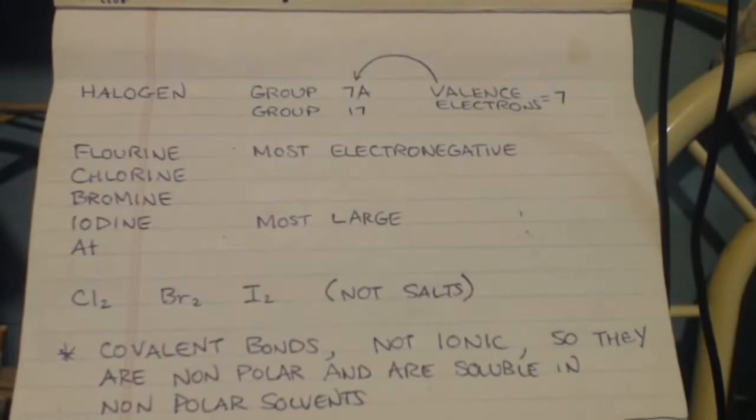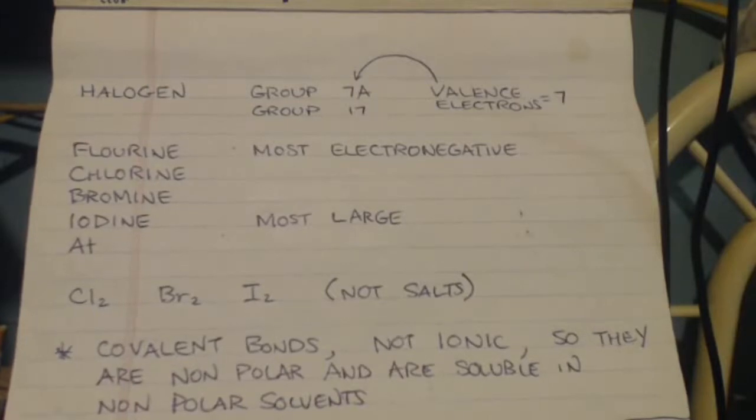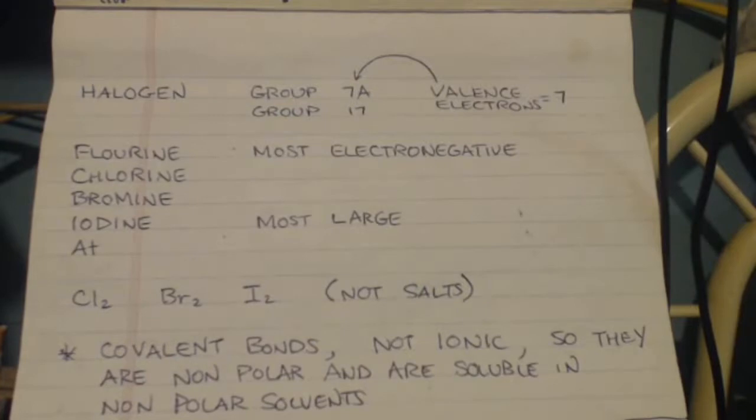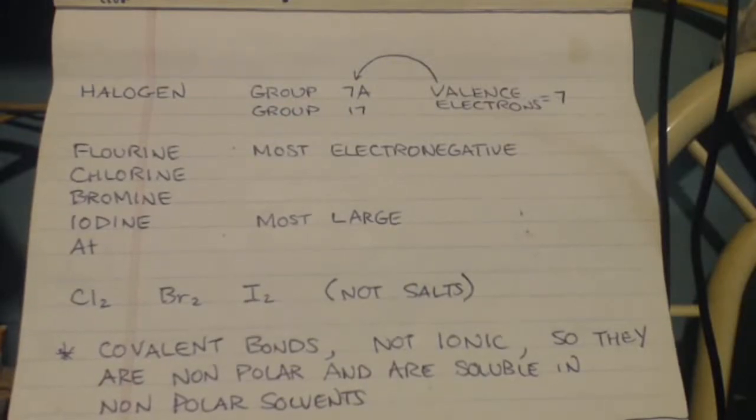I want you to keep in mind, chlorine, bromine, all the halogens, they're diatomic. They don't just exist like helium would exist by itself. But chlorine, bromine, iodine, they all exist with themselves. Two chlorines, two bromines, two iodines.